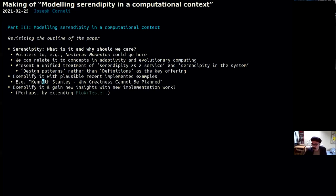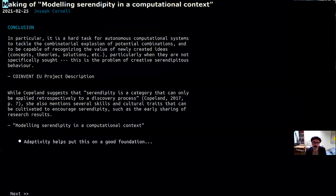And then finally, I think what would really make this all light on fire for people would be to exemplify it and gain some new insights with a new implementation. And in fact, this brings me to the conclusions. How did we all get started with this? In particular, it's a hard task for autonomous computational systems to tackle the combinatorial explosion of potential combinations and to be capable of recognizing the value of newly created ideas, concepts, theory, solutions, et cetera, particularly when they're not specifically sought. So this is the problem of creative serendipitous behavior.